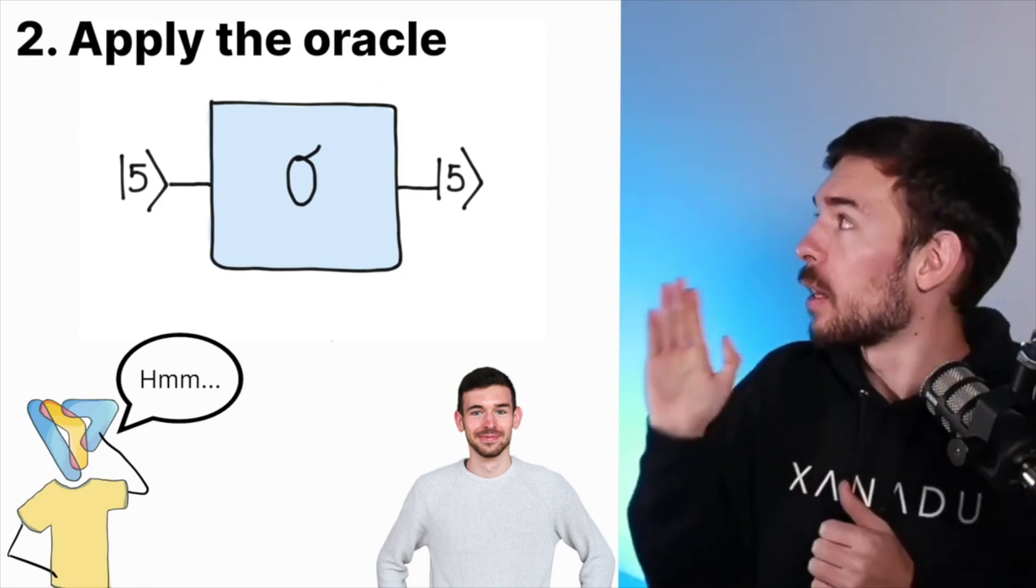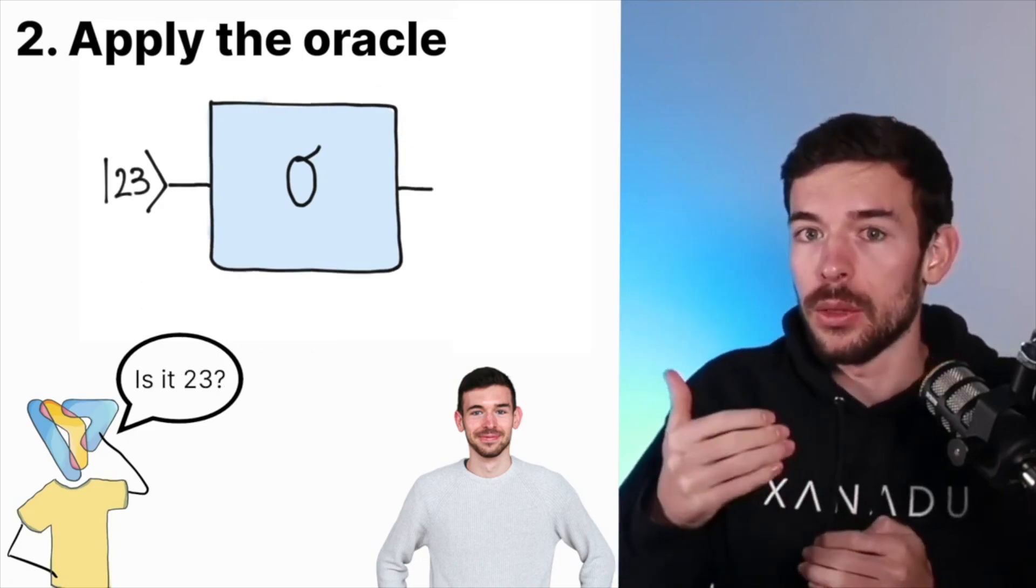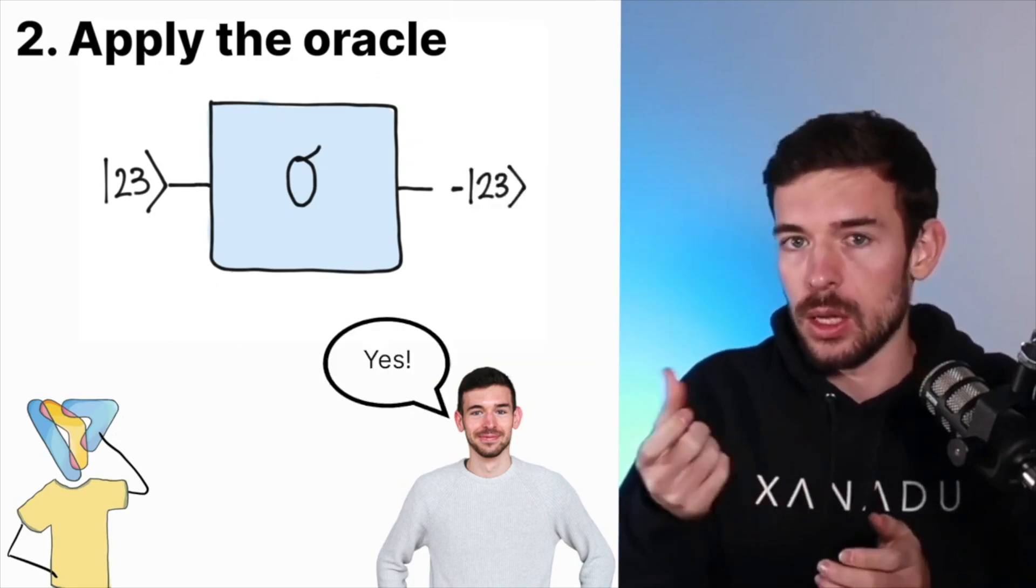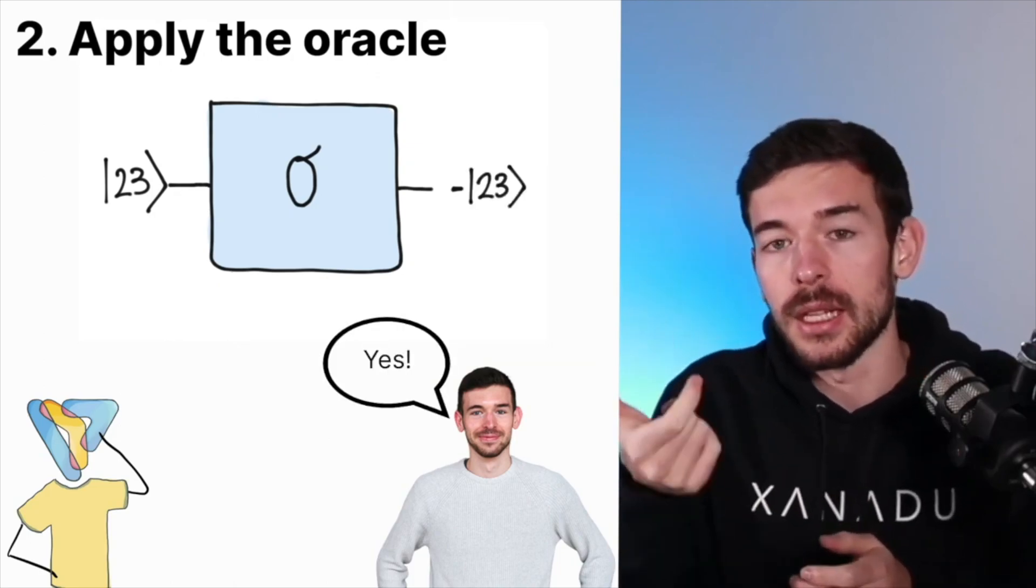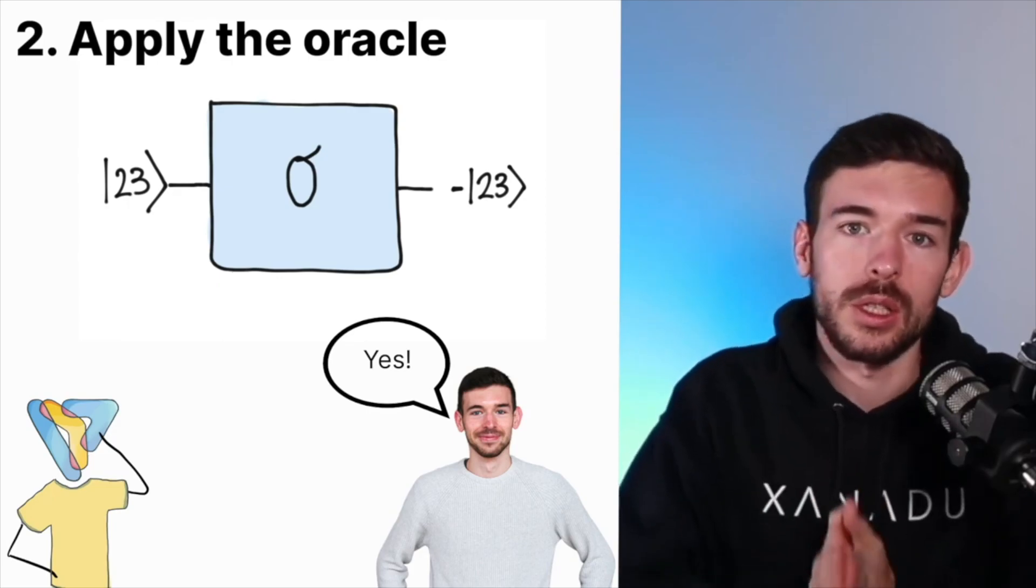However, if we apply the oracle to the number 23, the output of the circuit now is going to be minus 23. It means we flip the sign of these elements that we consider a solution.